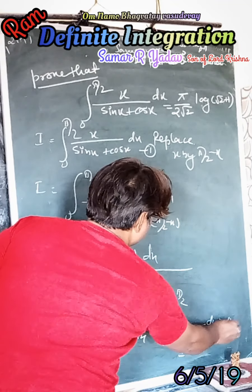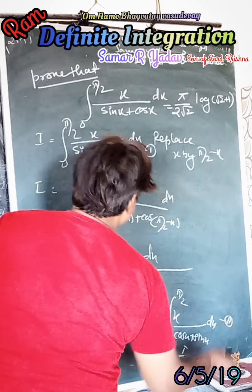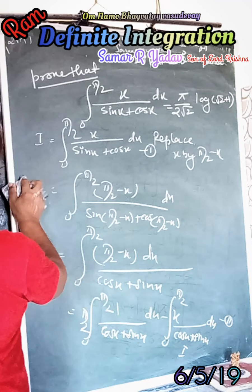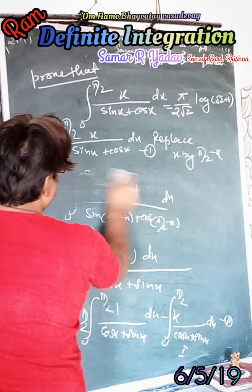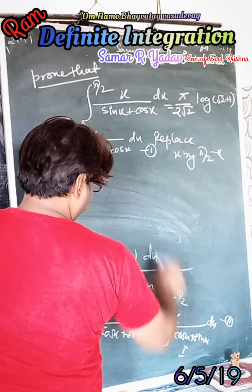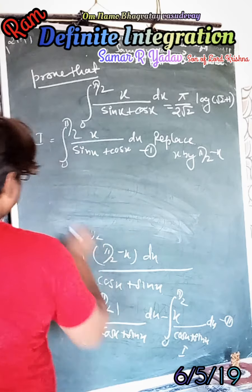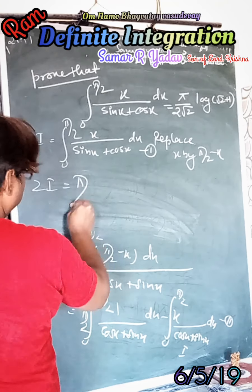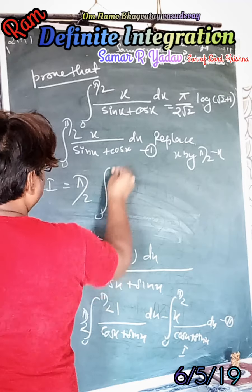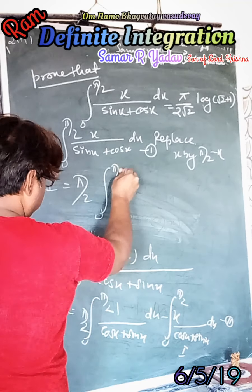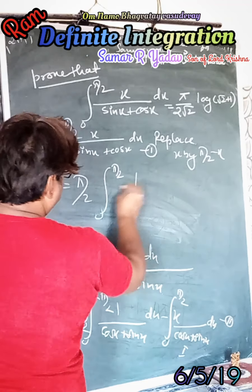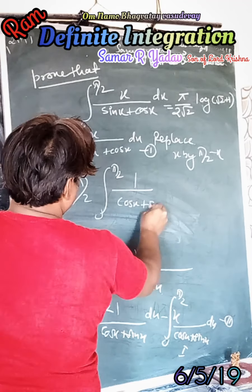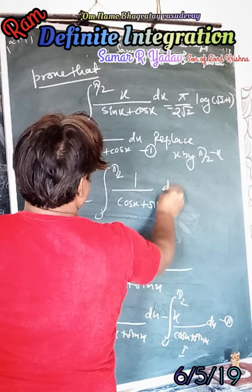Adding equation 1 and equation 2, we can write 2I is equal to π/2 times the integral from 0 to π/2 of 1/(cosx + sinx) dx.